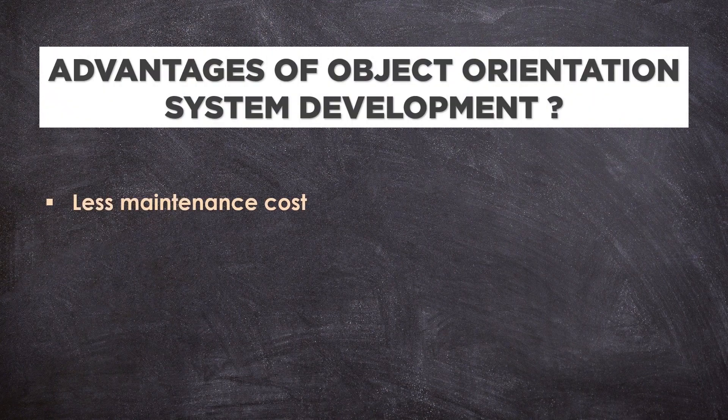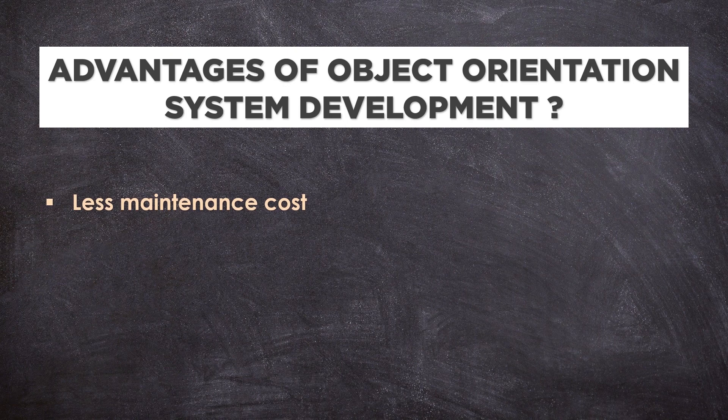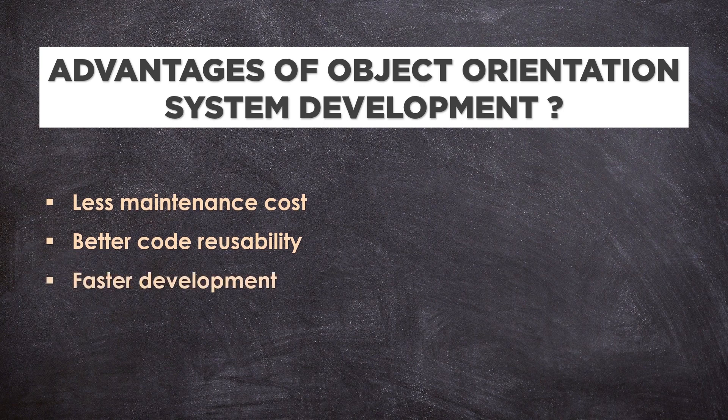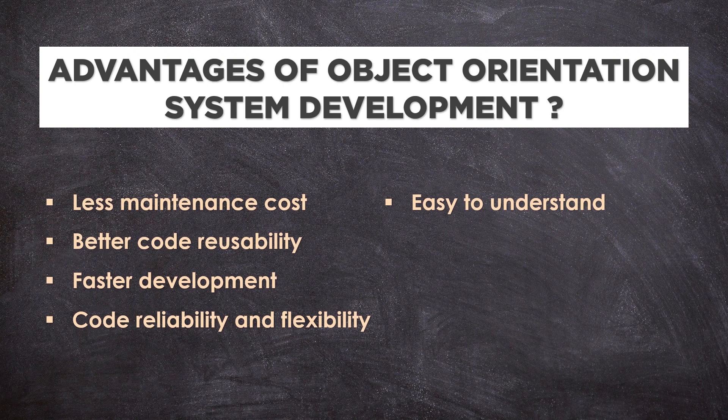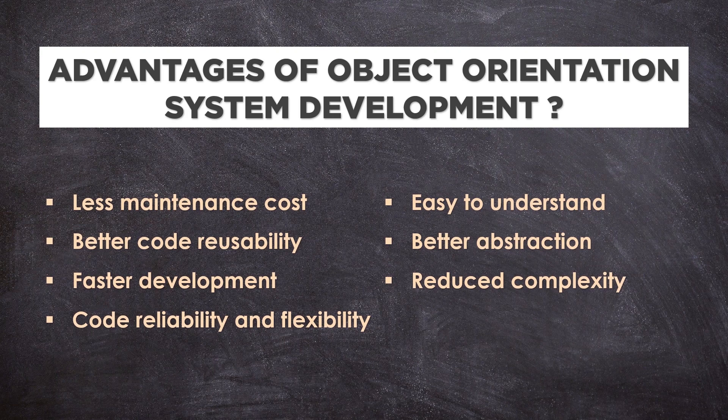Object-oriented software development provides less maintenance cost, mostly because it is modular. Better code reusability due to features such as inheritance and hence faster development. Improved code reliability and flexibility. Easy to understand due to real-world modeling. Better abstraction at object level. Reduced complexity during the transitions from one development phase to another.